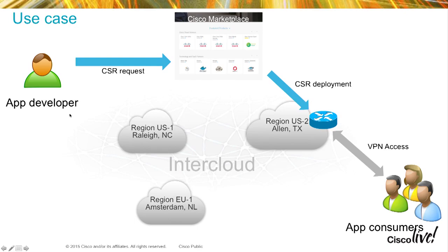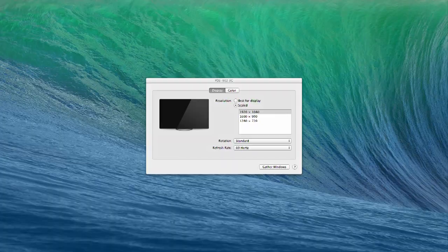They leverage CCS to host their applications and are now looking to get an easy way to allow their consumers to gain a secured way of accessing and consuming the application. In order to do that, they want to deploy a CSR1KV. I'll walk you through the process of doing that — you'll see it's very easy to leverage the marketplace as a single pane of glass to order and deploy applications.